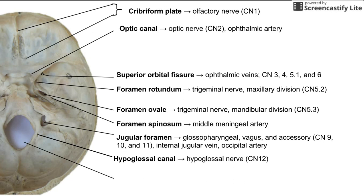The hypoglossal canal has the hypoglossal nerve going through it — that's cranial nerve 12.